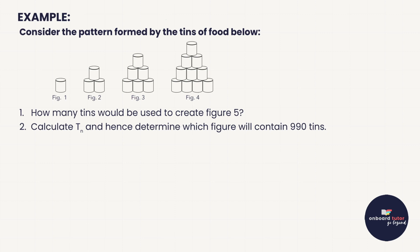Quadratic number patterns appear in real life — for example, in stacked tins at a grocery store. In figure 1 we have 1 tin, figure 2 has 3 tins, figure 3 has 6 tins, and figure 4 has 10 tins, as each new layer adds more tins underneath.